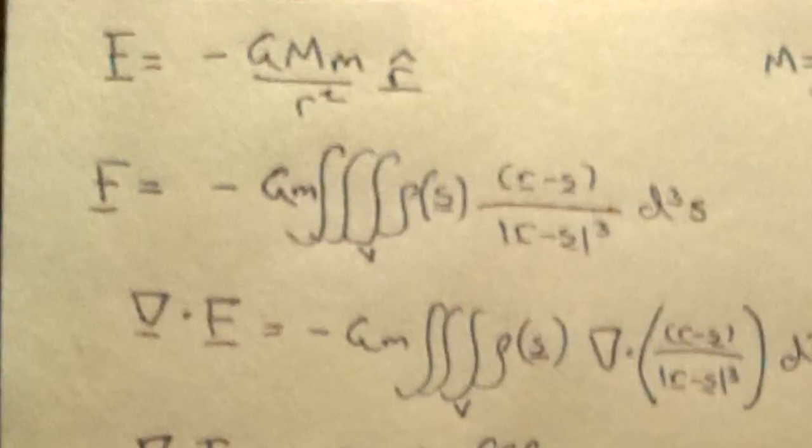So, we have this second equation here, F equals minus Gm, volume integral, rho of s, which is a scalar, r minus s over mod cubed r minus s, integrated over all space. And that's Newton's law of gravitation in a slightly better form.